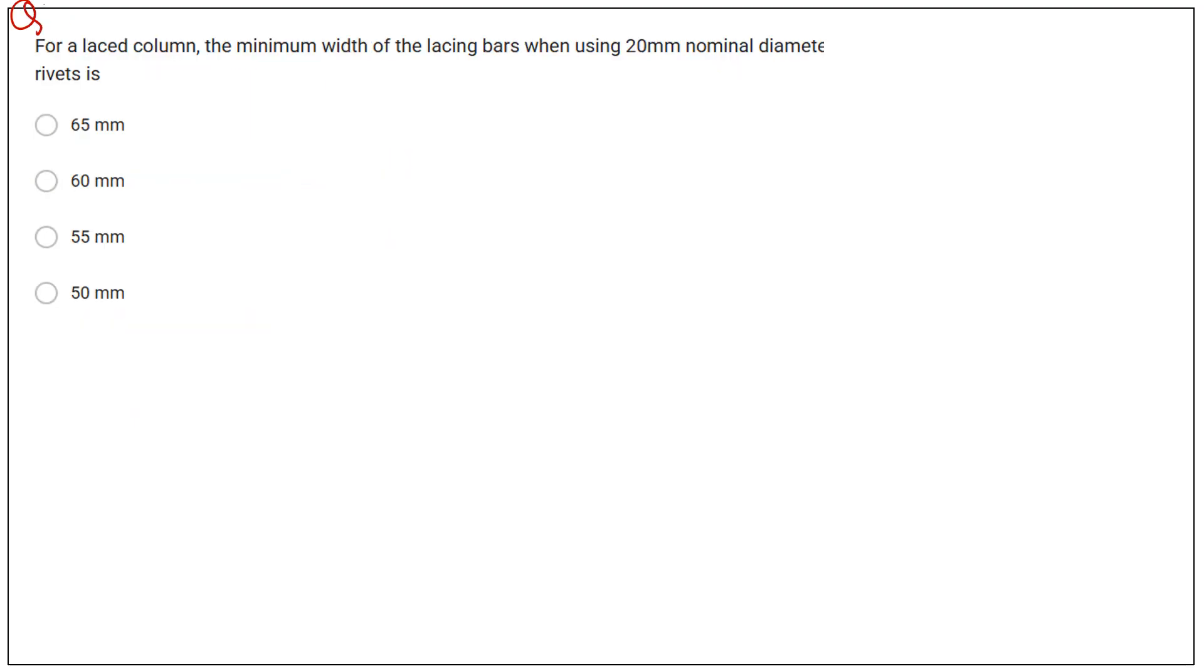Question number 14. For laced column, minimum width of lacing bar when using 20 mm diameter rivet is. For rivet and bolted connection, the concept of minimum width of lacing bar is similar. So here we consider for the bolted connection. Because rivet is not in the BMC syllabus. So for the bolted connection, the minimum width of the lacing bar is 3 times the nominal diameter. So here the given nominal diameter is 20 mm.